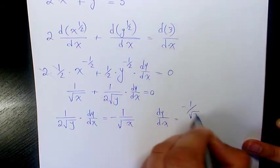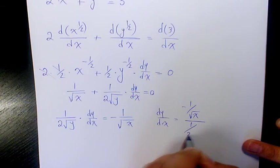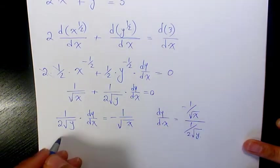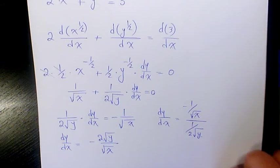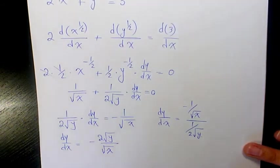So dy/dx equals negative 2√y/√x. So that's going to be the final answer to this question.